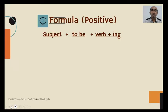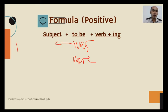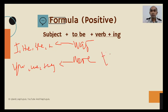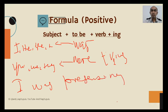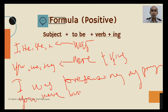Next, we are going to the formula. For a positive sentence, you use: subject + to be + verb-ing. The 'to be' here is 'was' and 'were.' Remember: 'was' is used with I, he, she, it. 'Were' is used with you, we, they, plus verb-ing. For example: I was presenting my project. For example: You were living in Singapore.